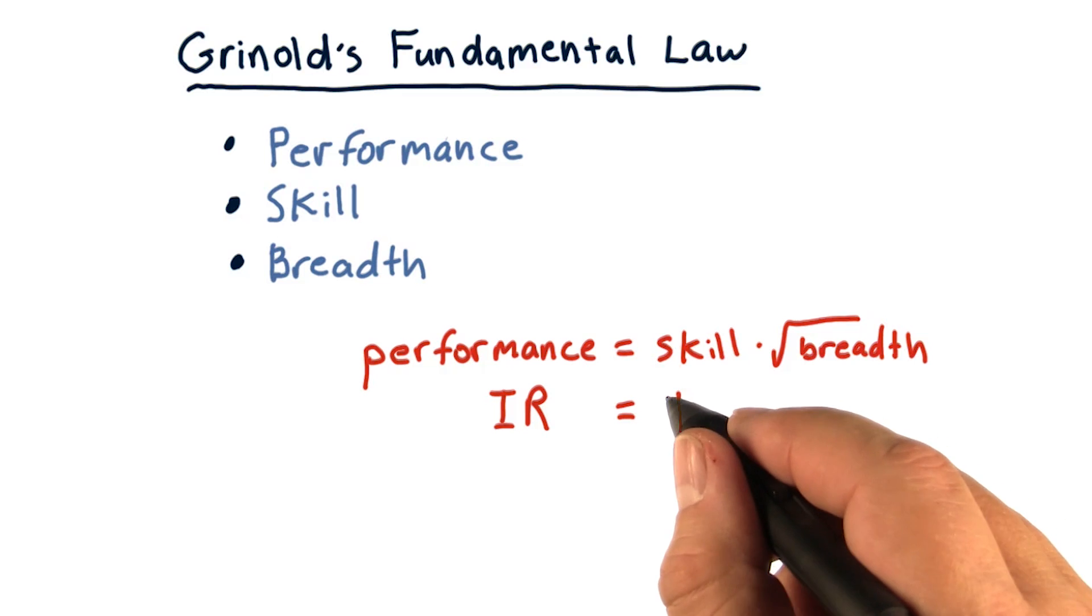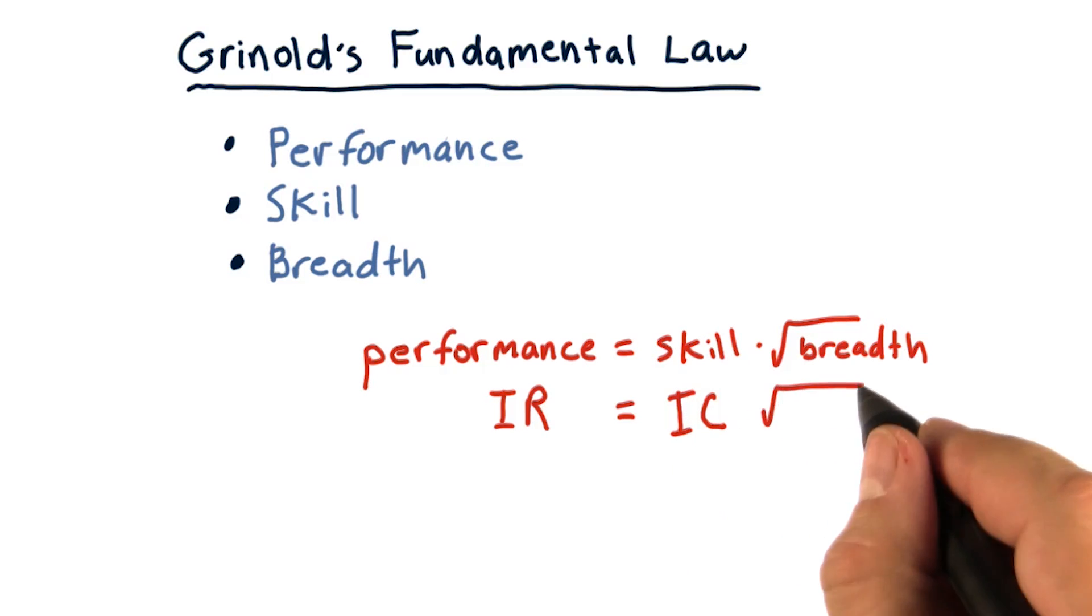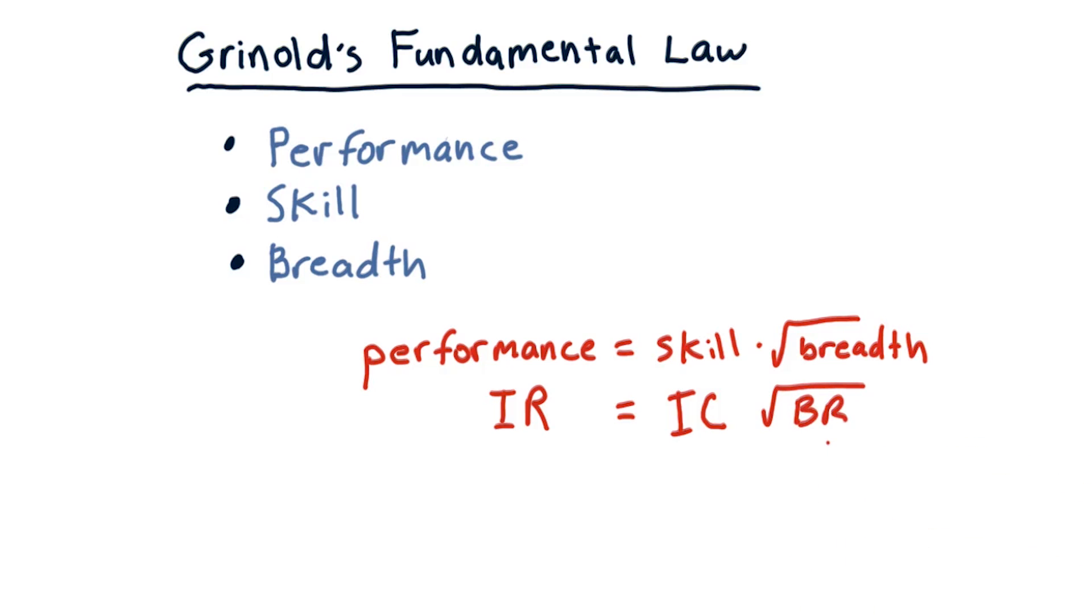Skill is summarized in something called information coefficient, and breadth is just how many trading opportunities we have. We'll expand on this more as we go through the lesson.